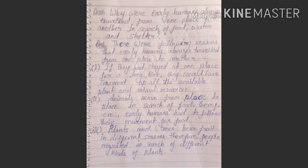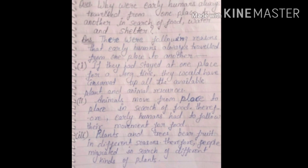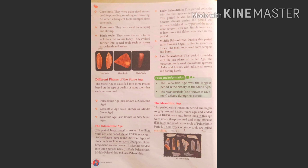The next homework question was: why did early humans always travel from one place to another? The answer has three reasons. First, if they stayed at one place too long, they would consume all available plant and animal resources. Second, animals move in search of food, so early humans had to follow them. Third, plants and trees bear fruits in different seasons, so people migrated in search of different kinds of plants.